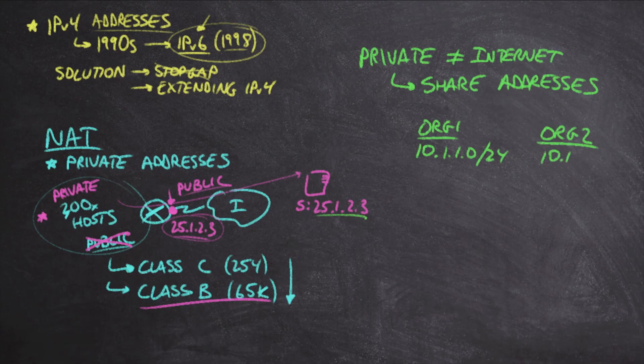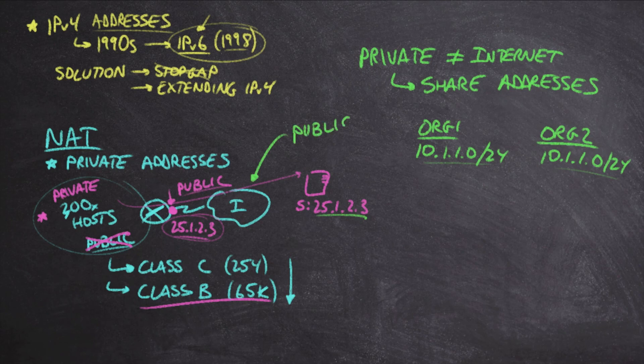Well, guess what? Organization two can also use that exact same subnet. And the reason for that is because these subnets never actually show up on the internet. The internet must be a public address space.